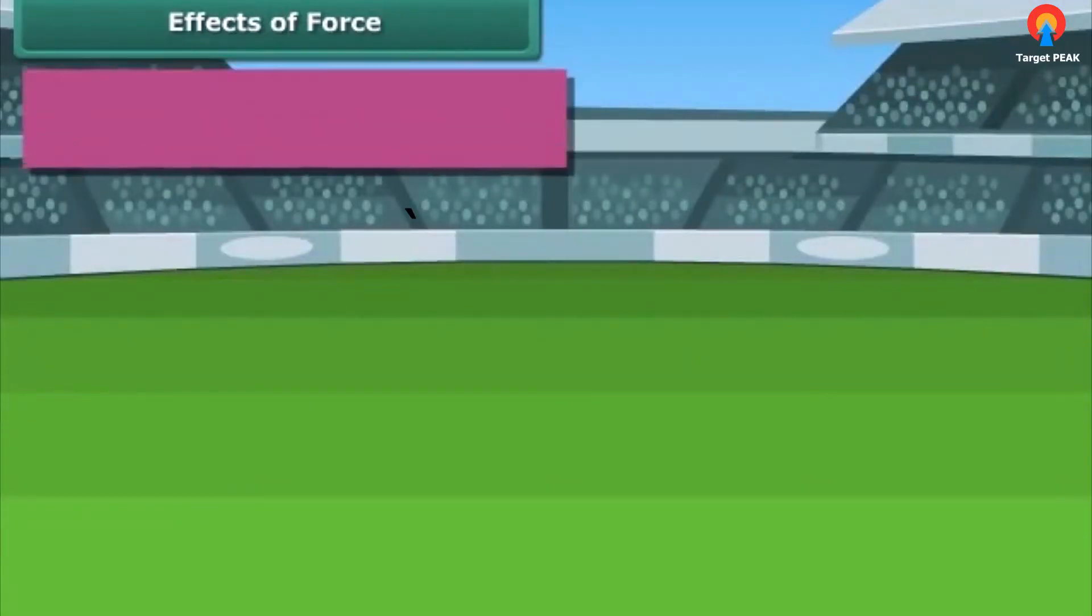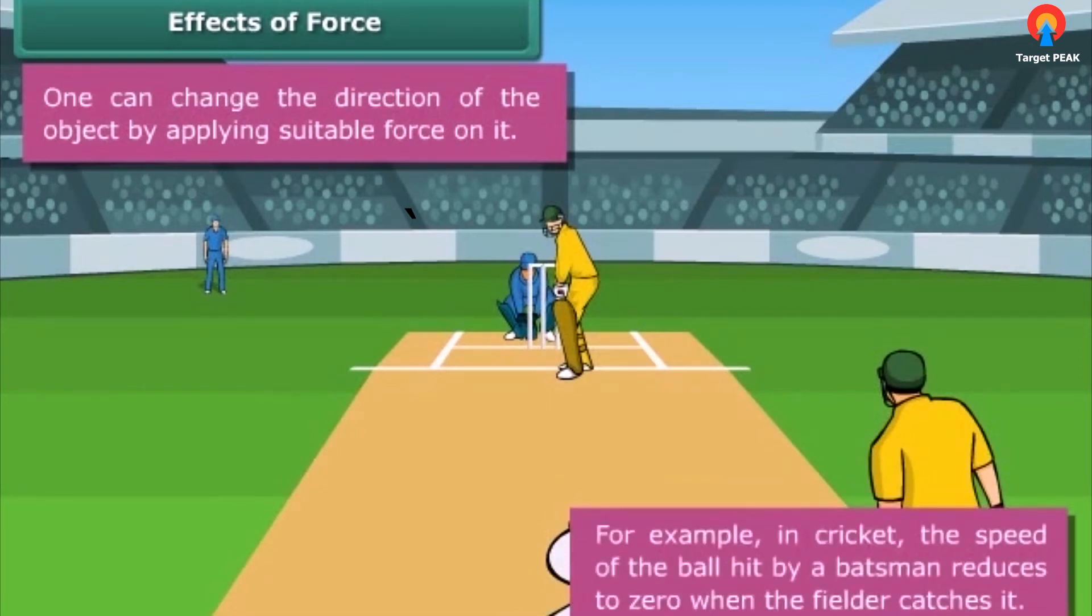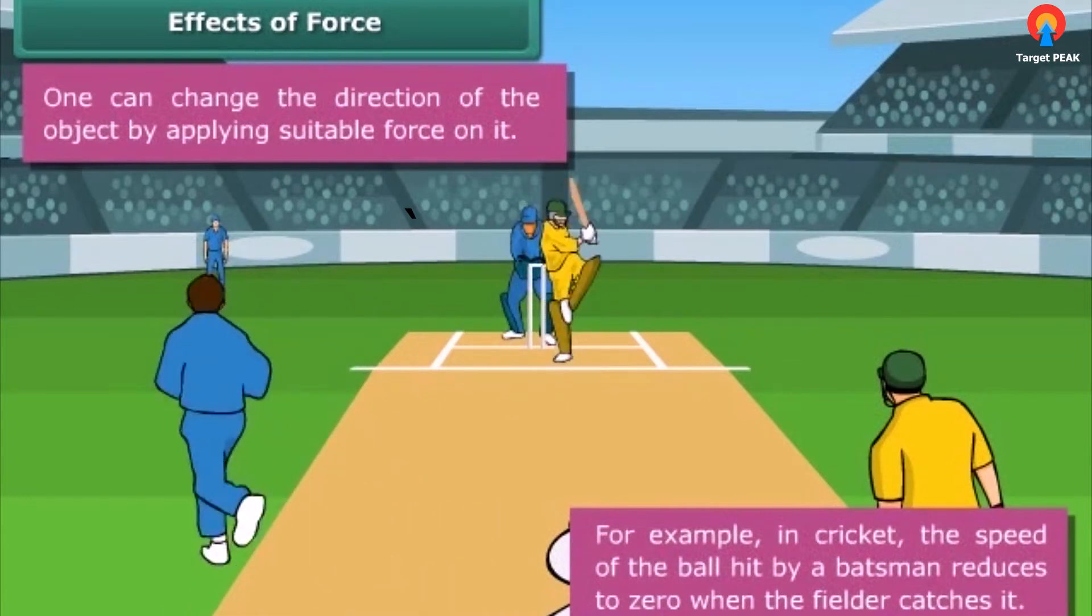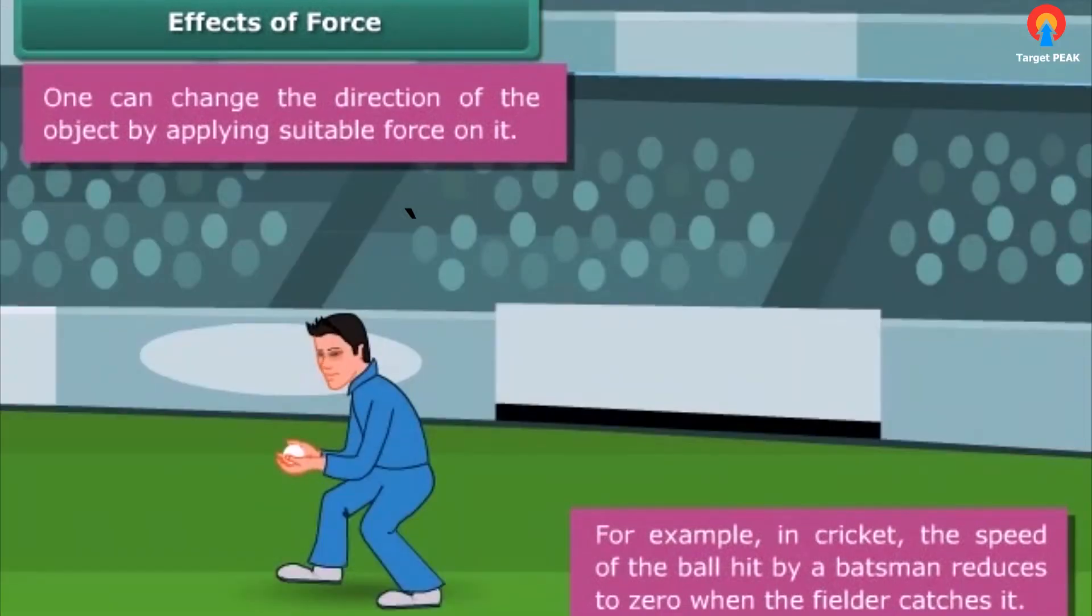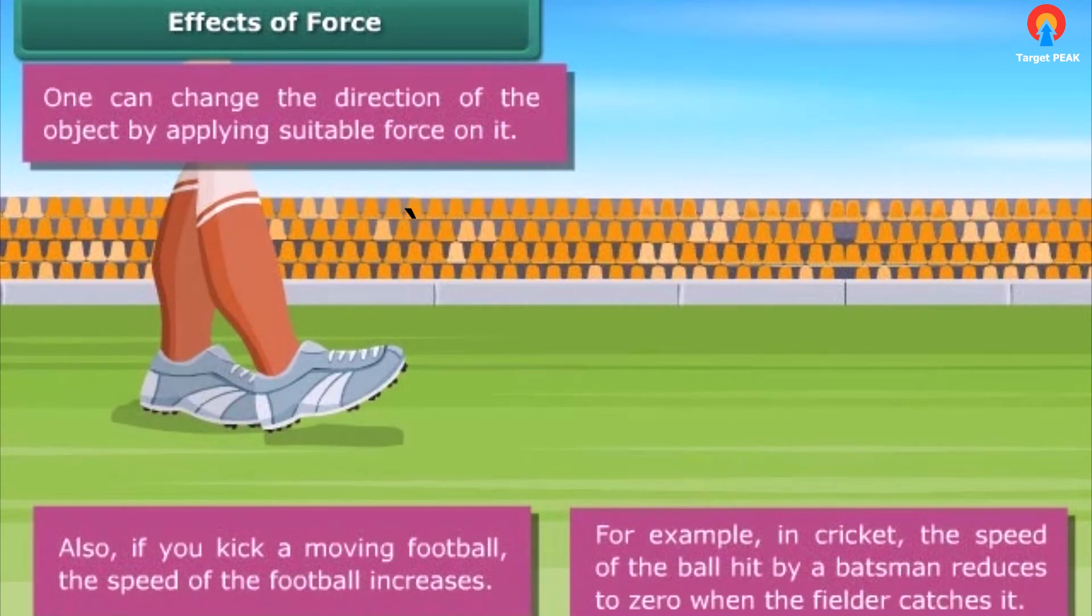One can change the direction of the object by applying suitable force on it. For example, in cricket, the speed of the ball hit by the batsman reduces to zero when the fielder catches it. Also, if you kick a moving football, the speed of the football increases.